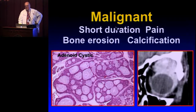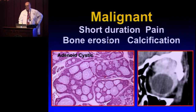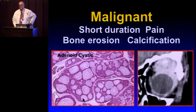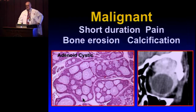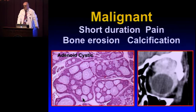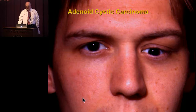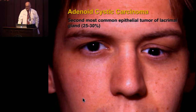If you have short duration (like six months), pain, bone erosion, or calcification, these are clinical signs that you're dealing with malignancy. With malignancy, the more you get out the better. Here is a fairly young man with an adenoid cystic carcinoma — the second most common epithelial tumor of the lacrimal gland at 25 to 30%, and highly malignant with a dismal prognosis.